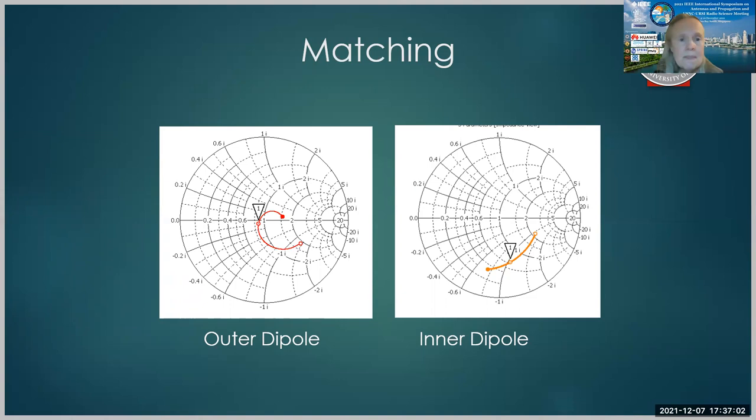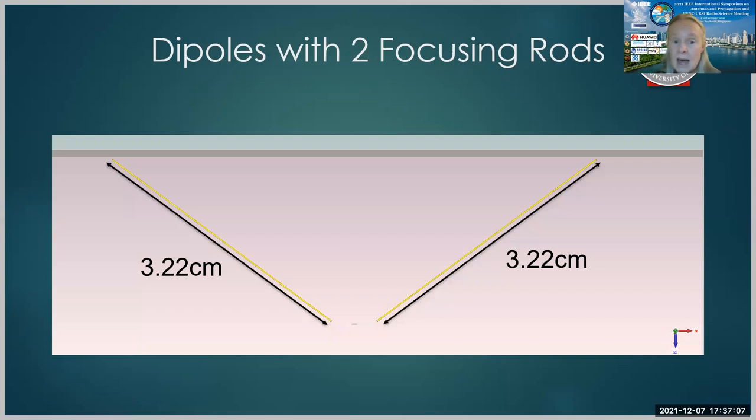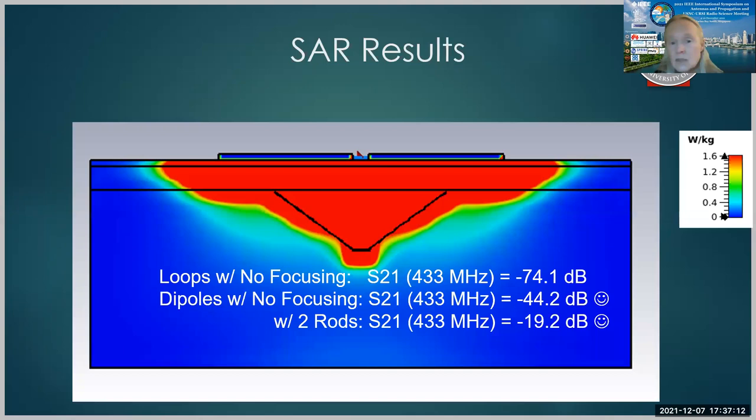Now let's see what would happen if we use the internal and external dipole and we add focusing rods like the polymer rods that we've mentioned before. So in this case, we can see that there is some concentration of power at the location of the implant. And in fact, we see a substantial improvement.